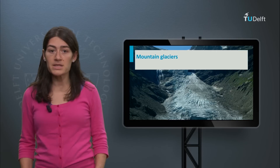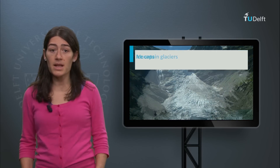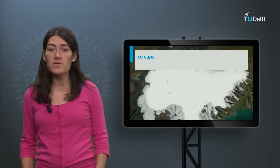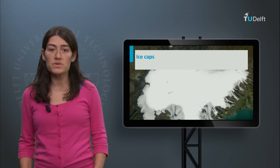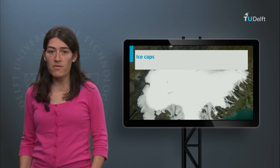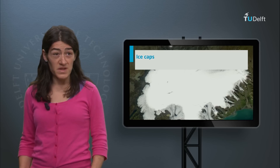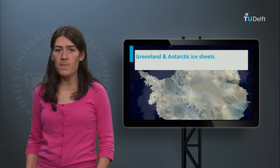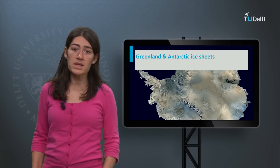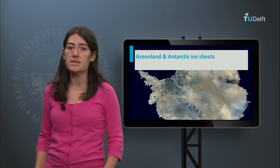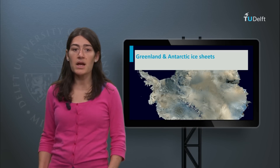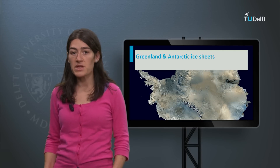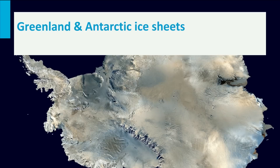Mountain glaciers and ice caps have a total volume equivalent to 0.5 meters of sea level rise. The continental-size ice sheets of Greenland and Antarctica have 7 and 56 meters respectively.